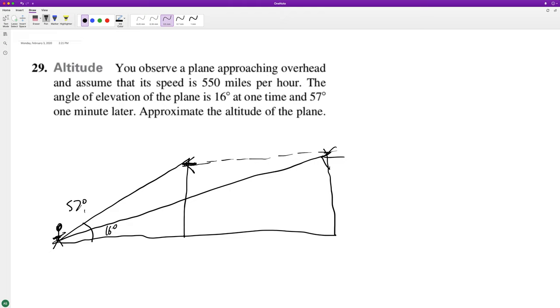The difference here is one minute later. After one minute of traveling at 550 miles an hour: one minute equals 1/60th of an hour, times 5280 feet in one mile, times 550 miles per hour. These cancel out, and we end up getting 48,400 feet. So the difference in time of one minute is 48,400 feet.